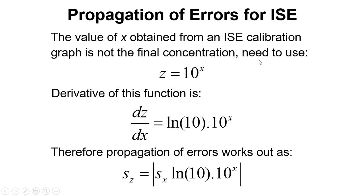So let's look at this for ion-selective electrodes. Z equals 10 to the X to get the concentration back out if we use Z as concentration. Now the derivative of this, if we mathematically take the derivative of this, we get dZ by dX equals natural log of 10 times 10 to the X. And then for the propagation of errors, we need to multiply that by the error in X. We've got that from the previous slides and so we're now ready to put this together.